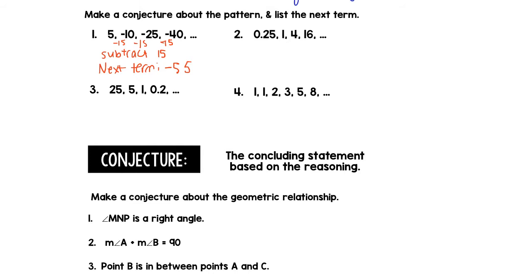On this next one to get from 0.25 to 1, I add 0.75. From 1 to 4, I add 3. Well, that's not the rule. If I want to get from 0.25 to 1, I can also multiply by 4. To get from 1 to 4, I can multiply by 4. 4 to 16, I multiply by 4. So this looks like my rule is multiply by 4. That makes my next term 64.